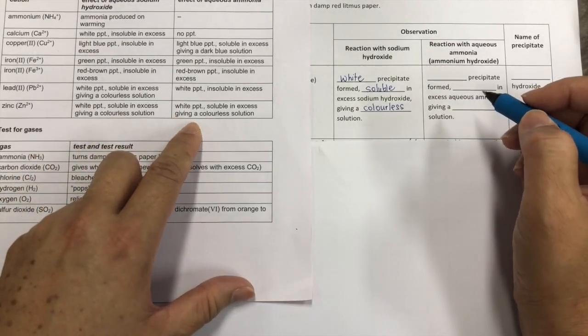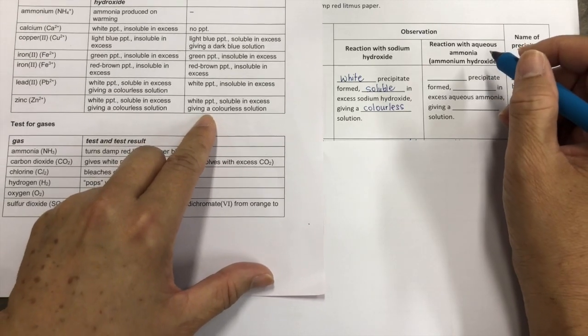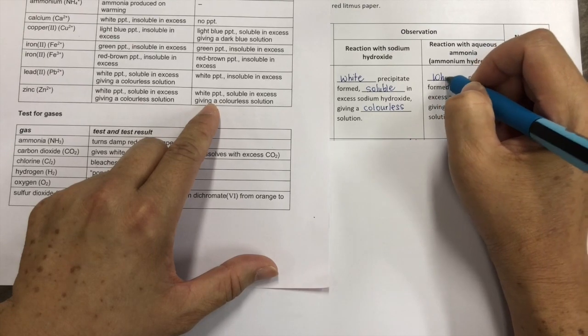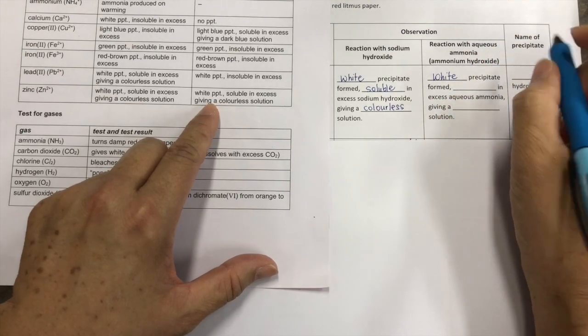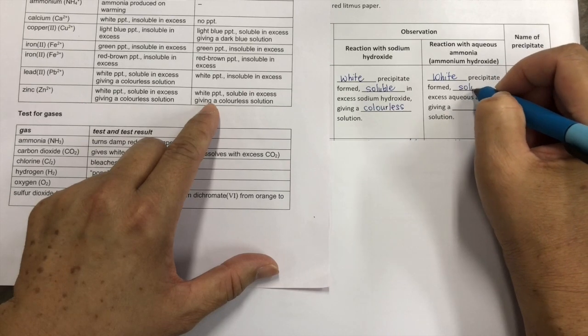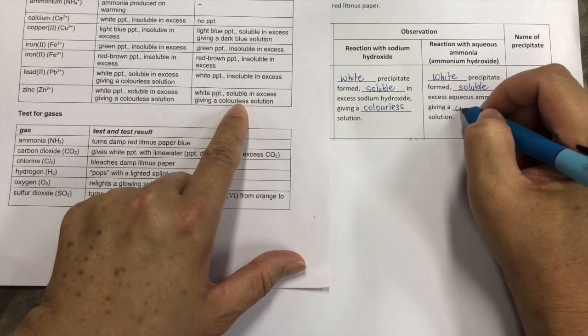For the effect of aqueous ammonia, you will write according to the table stated. White precipitate form, soluble in excess aqueous ammonia, giving a colourless solution.